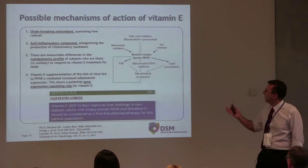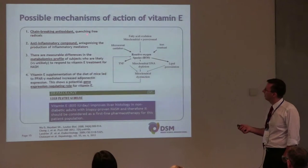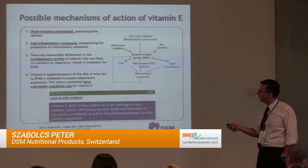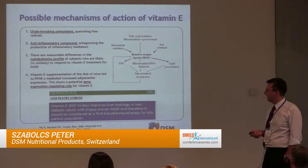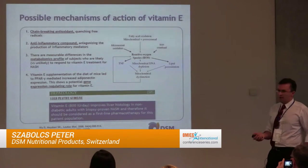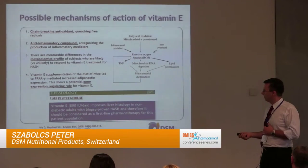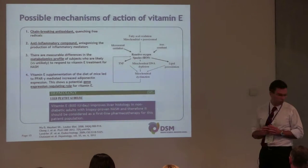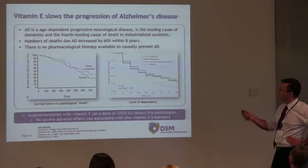It was actually a very similar effect to pioglitazone, which has since been withdrawn from the market, and there was a clear difference between placebo and the two treatments. The possible mechanisms of action include antioxidant properties, anti-inflammatory properties, metabolomics profiles, and gene expression regulation regarding PPAR-gamma and other mechanisms. As I mentioned, there is no current treatment for NASH, and therefore the American Gastroenterological Association published a recommendation that vitamin E improves liver histology in NASH adults without diabetes.